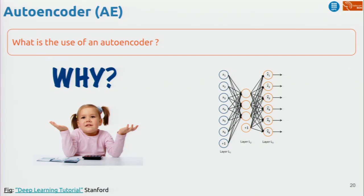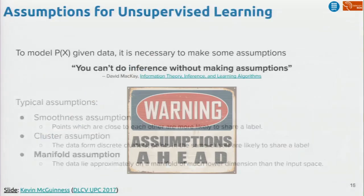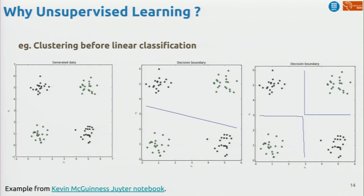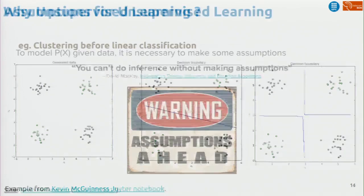So we learn a descriptor that we then use for another task. The bag of visual words algorithm does exactly this — it produces descriptors, some representations, which are very suitable for other tasks like classification. The idea is: you learn a descriptor and then use it for another task. That's the core message of this lecture.